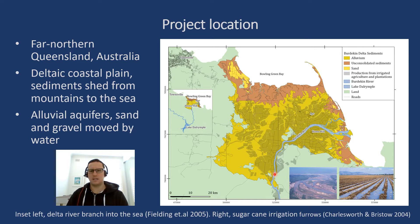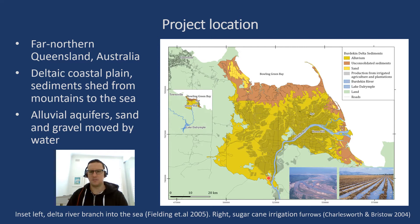As the sediment is transported by the river it can be sorted and unsorted — think of a pebbly sandy beach. This location just north of the Burdekin River mouth is shown in the inset image, and you can see all the channel bars of sand and gravel and the different bar islands. The grey areas visible here are sugarcane irrigation, and the image on the bottom right shows the sugarcane irrigation furrows, where water sits in the ditches and the plants grow on the mounds.